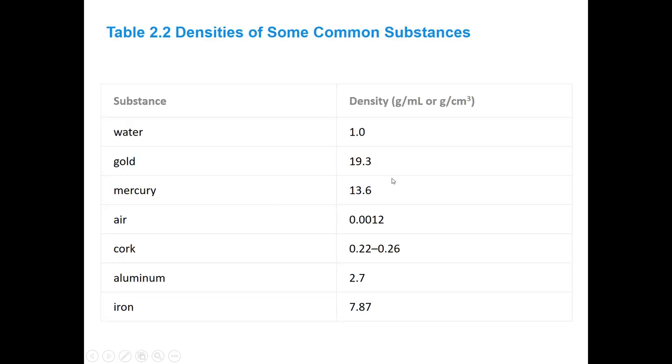Here's some examples of densities of various substances. The density of water is 1 g/mL or 1 g/cm³. Remember, one centimeter cubed equals one milliliter. Gold is 19.3, so a lot more dense. Mercury is less dense than gold. Air is 0.0012 grams per milliliter.